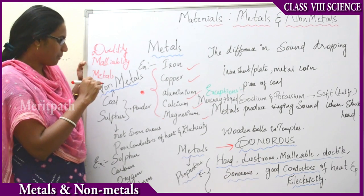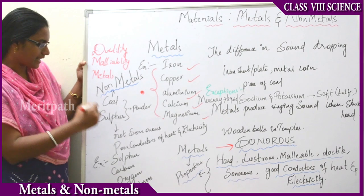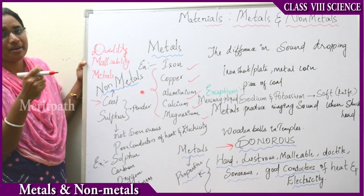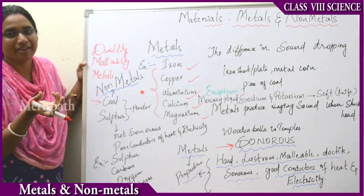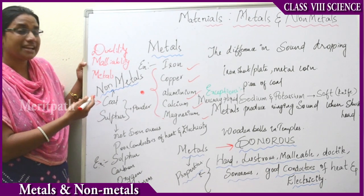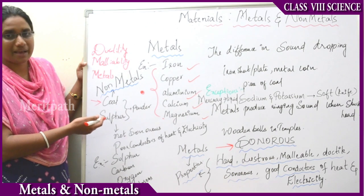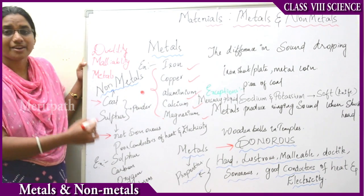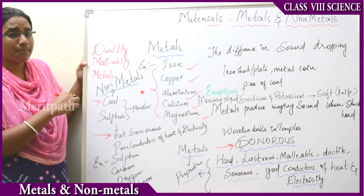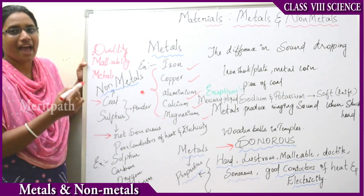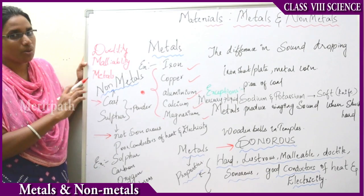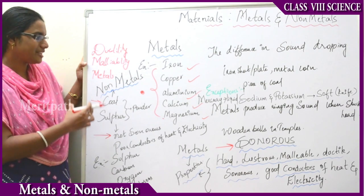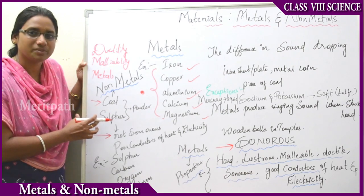Now, coming to non-metals, there are different types. The best examples of non-metals are coal and sulphur. When struck with a hammer, they produce powder rather than sheets and wires — that is the key difference. By these properties you can classify them as non-metals. The other important properties of non-metals are: they are not sonorous, not very hard, and they are poor conductors of heat and electricity.